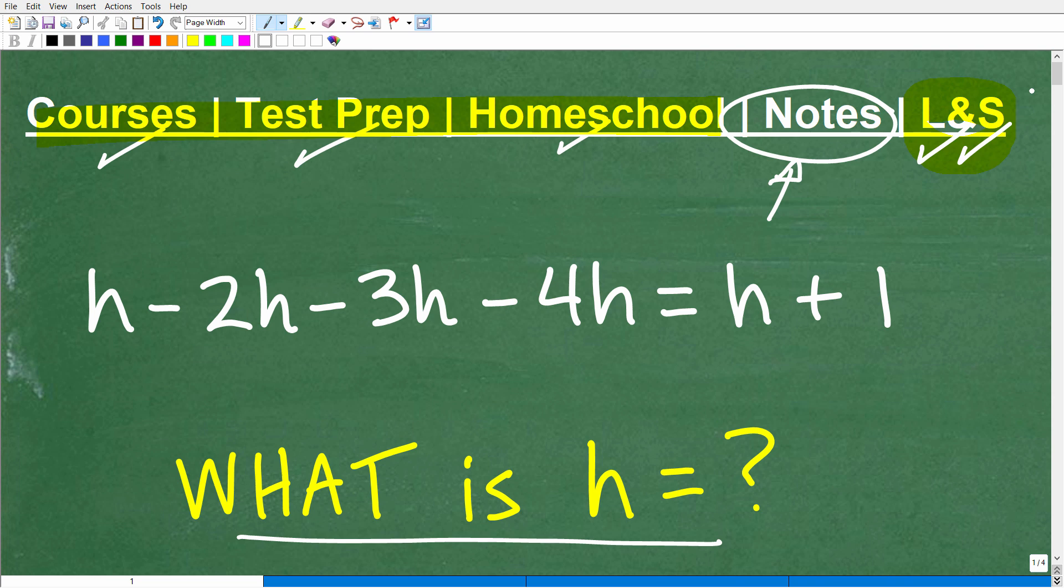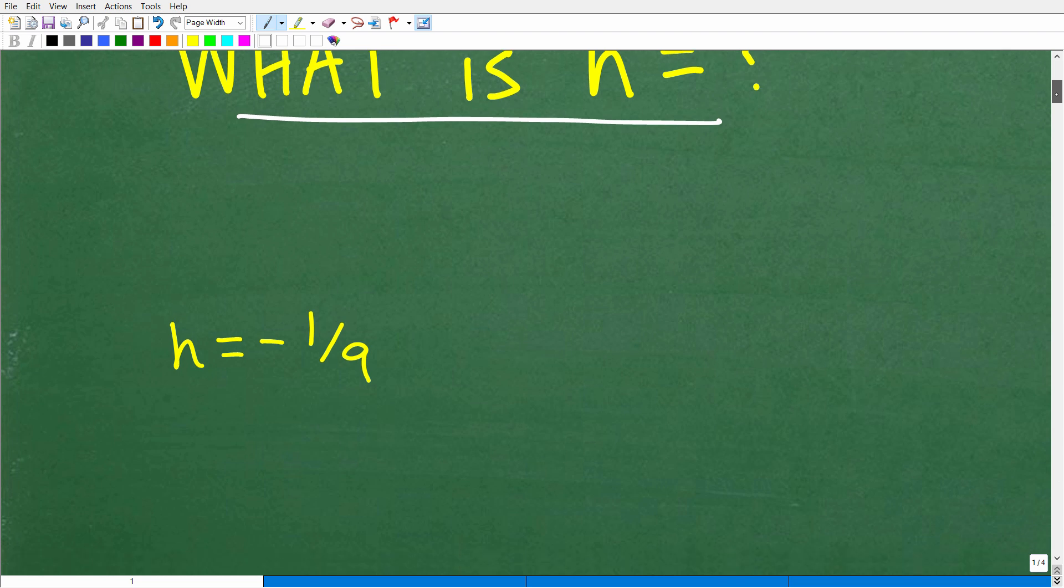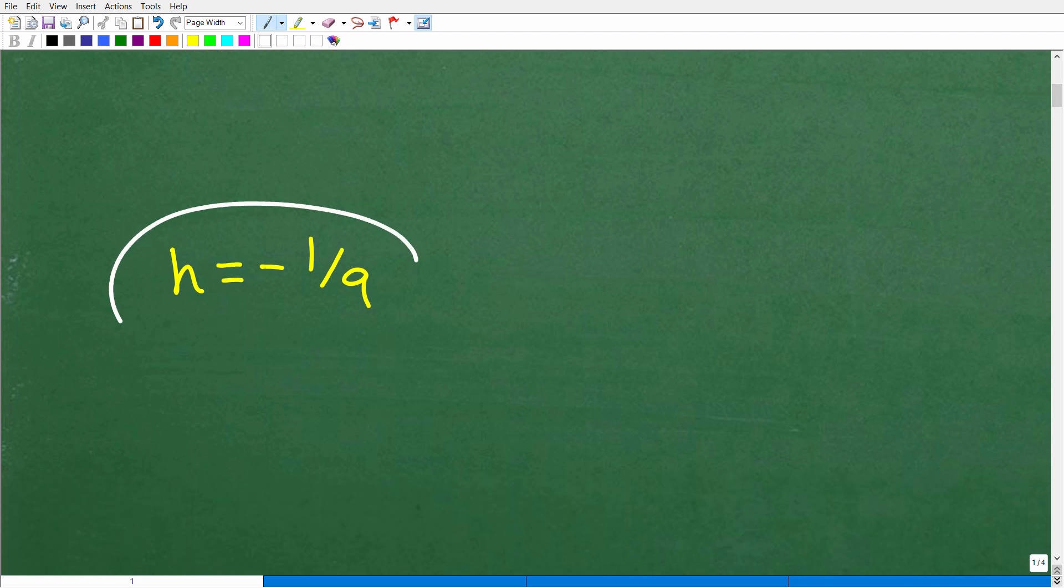Okay, so let's go ahead and take a look at the solution to this problem. We have h minus 2h minus 3h minus 4h is equal to h plus 1. This type of equation is what we would call a basic linear equation. So if you're like, wow, where in my course would I be studying these particular type of equations? Well, this would fall into the category of a linear equation. But let's go ahead and take a look at the answer. h is equal to negative 1 over 9, negative 1 ninth.